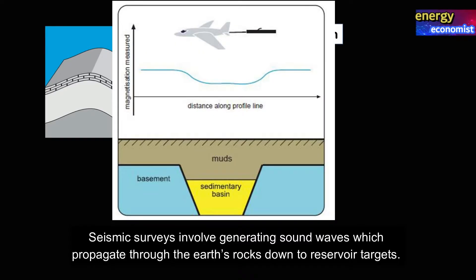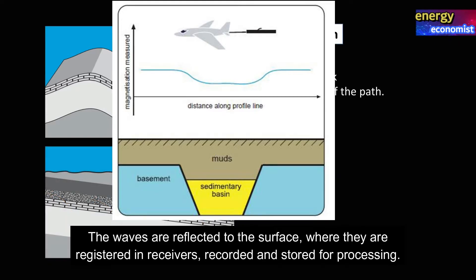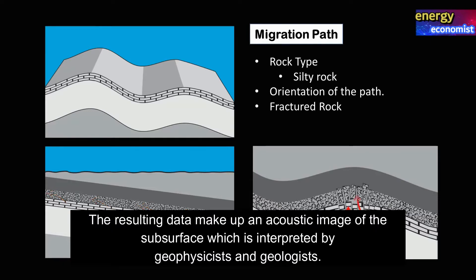Seismic surveys involve generating sound waves which propagate through the earth's rocks down to reservoir targets. The waves are reflected to the surface where they are registered in receivers, recorded, and stored for processing. The resulting data make up an acoustic image of the subsurface, which is interpreted by geophysicists.